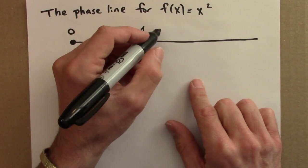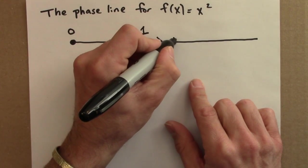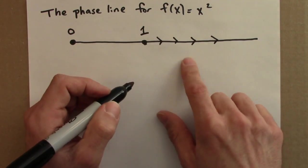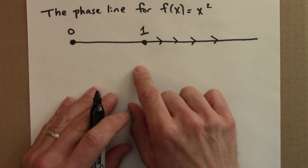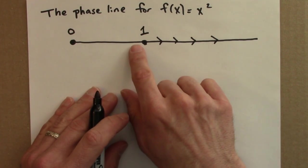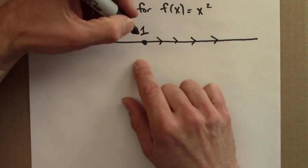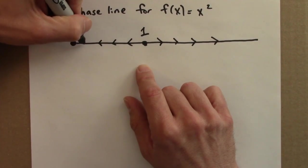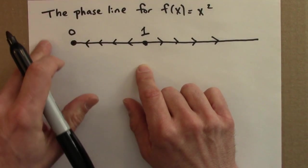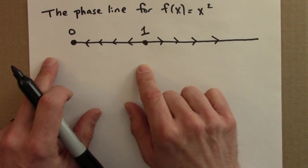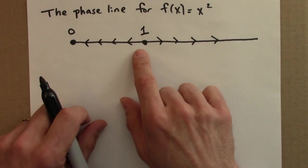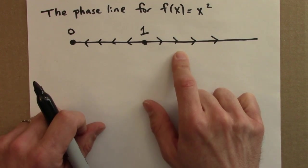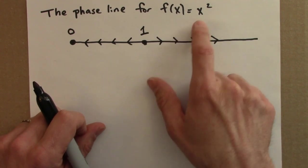Any number larger than 1 gets larger — it moves to the right on this number line when iterated. If we start with a number between 0 and 1, it will get smaller. This is the phase line for the squaring function. It tells us the long-term behavior, the ultimate fate of any positive initial condition for this function.